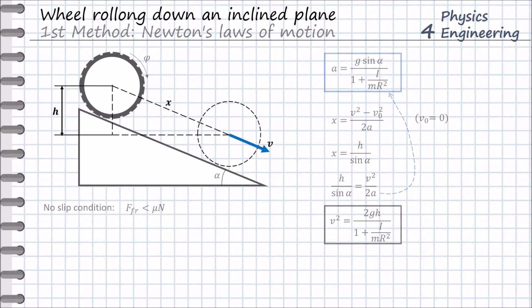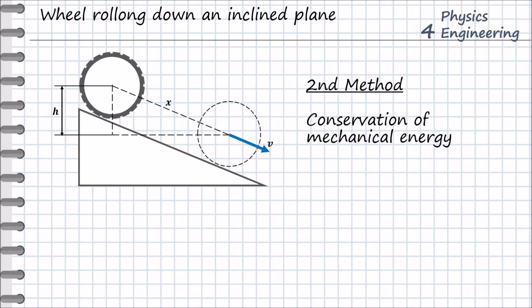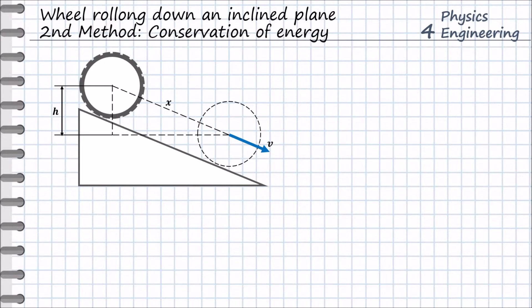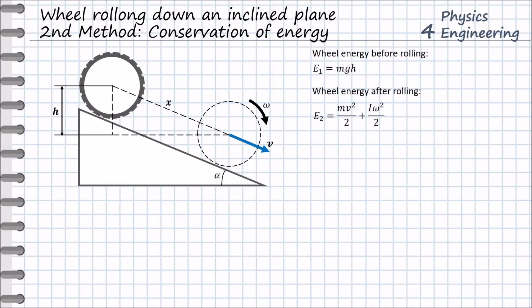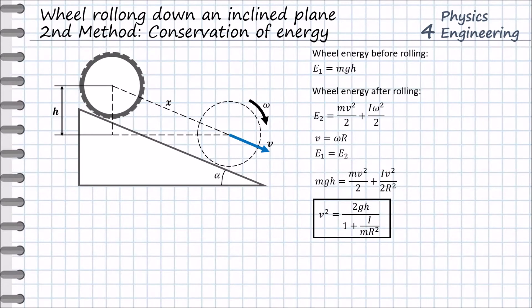We go now to the second method: conservation of mechanical energy. We define the mechanical energy of the wheel at the top and bottom positions. E1 is the potential energy at the top, which is mgh. At the bottom we have only kinetic energy, which is the sum of the linear and rotational contributions: mv² divided by 2 and I·omega² divided by 2. Using the kinematic relation between linear and angular velocity and setting E1 equal to E2, we obtain an equation from which we can quickly derive the final linear velocity of the wheel.